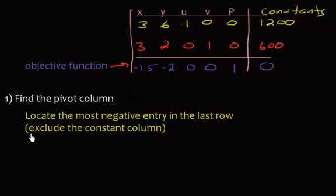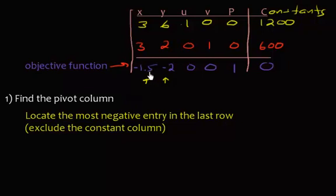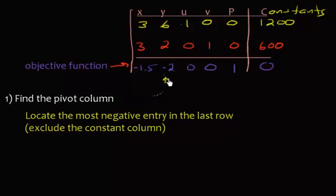To find the pivot column, locate the most negative entry in the last row, excluding the constant column. Scan through the last row and find any negative numbers — we have one here and one here. The most negative means whichever has the largest absolute value. Negative two is our largest negative number, so that is our pivot column.